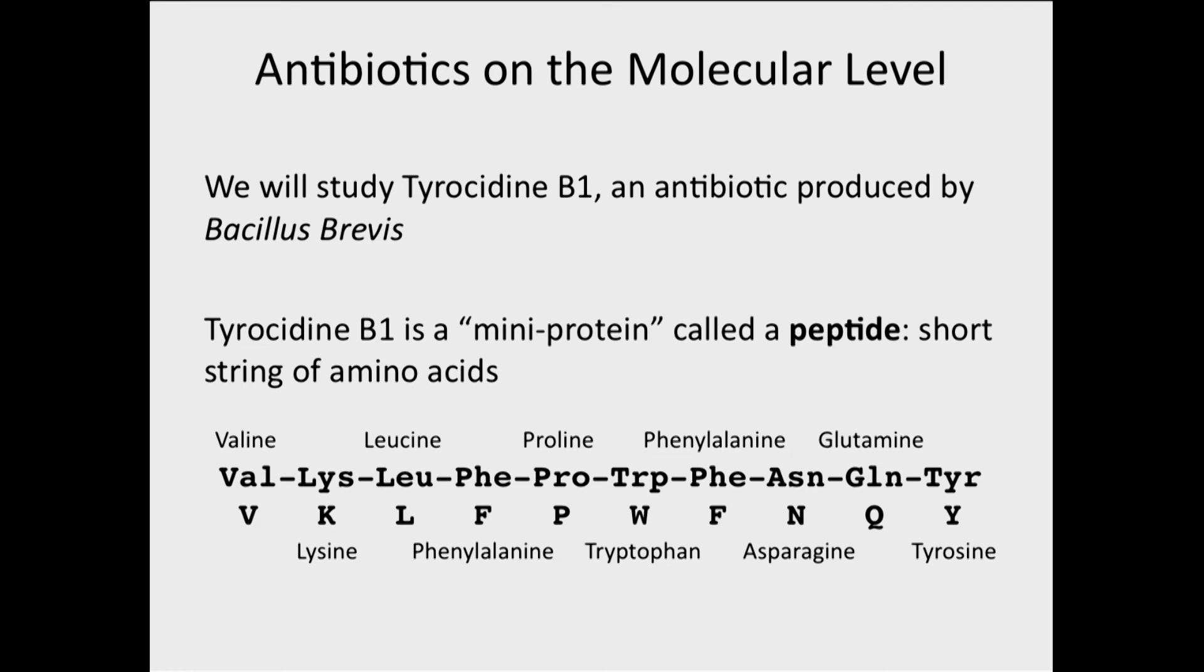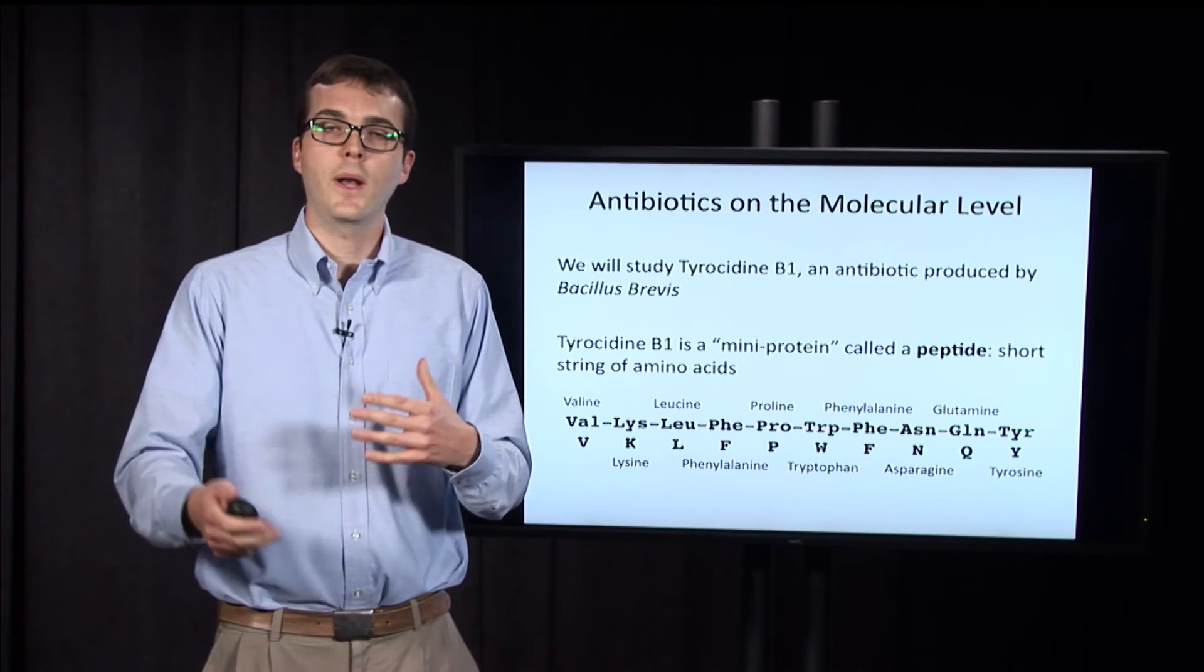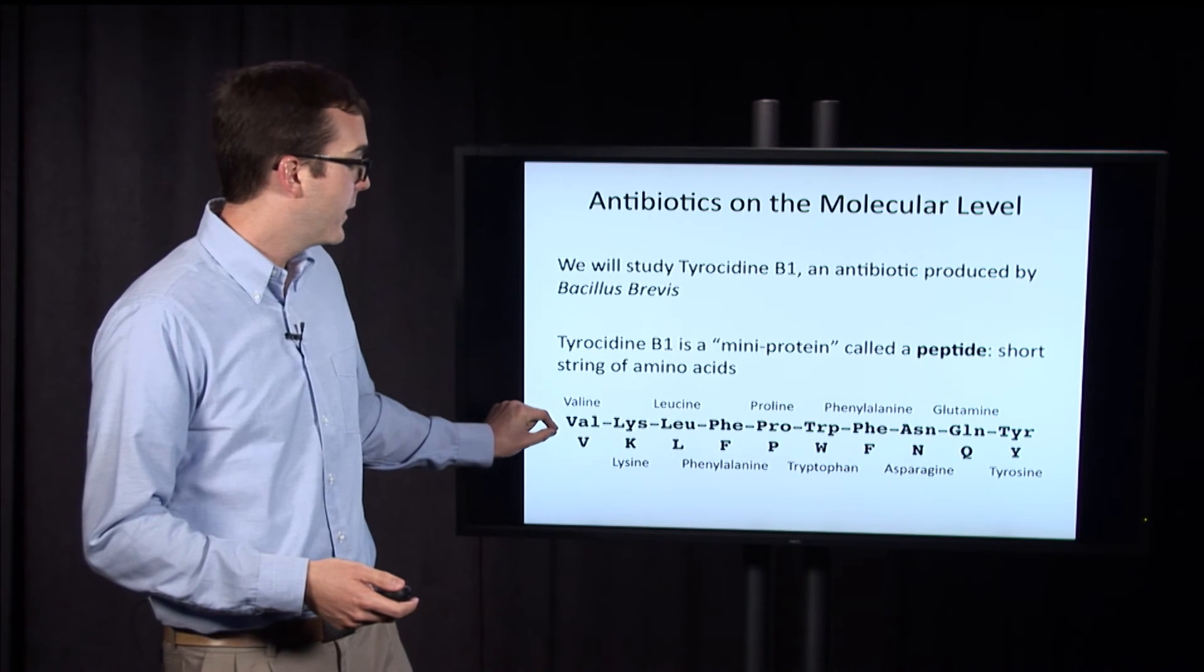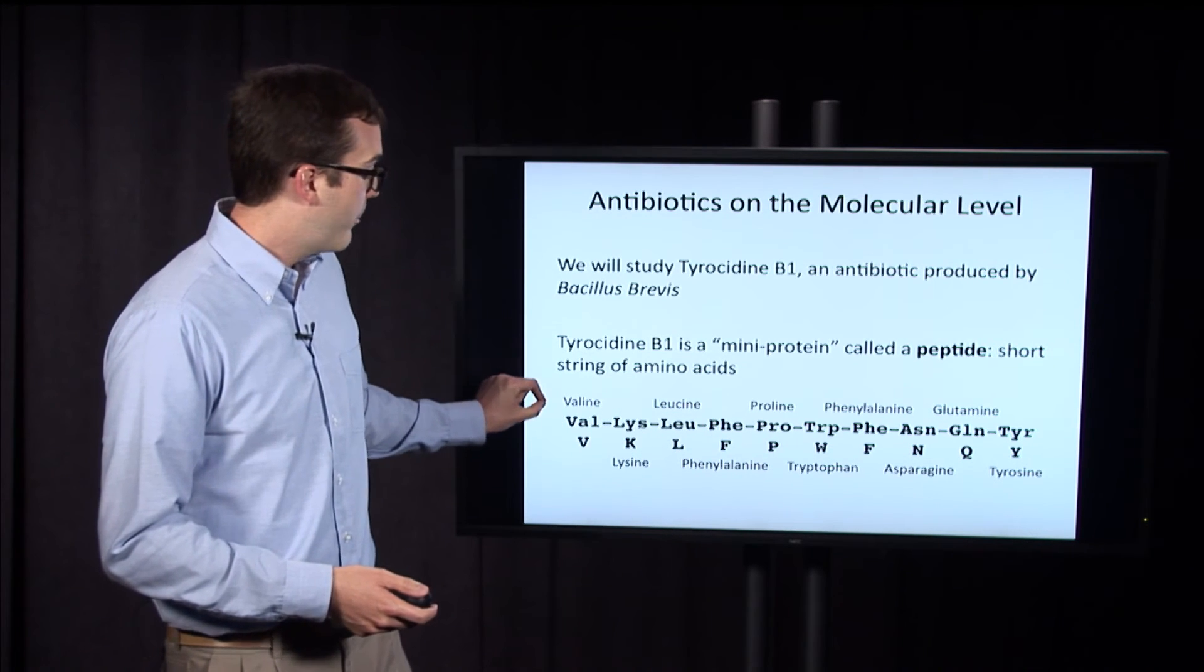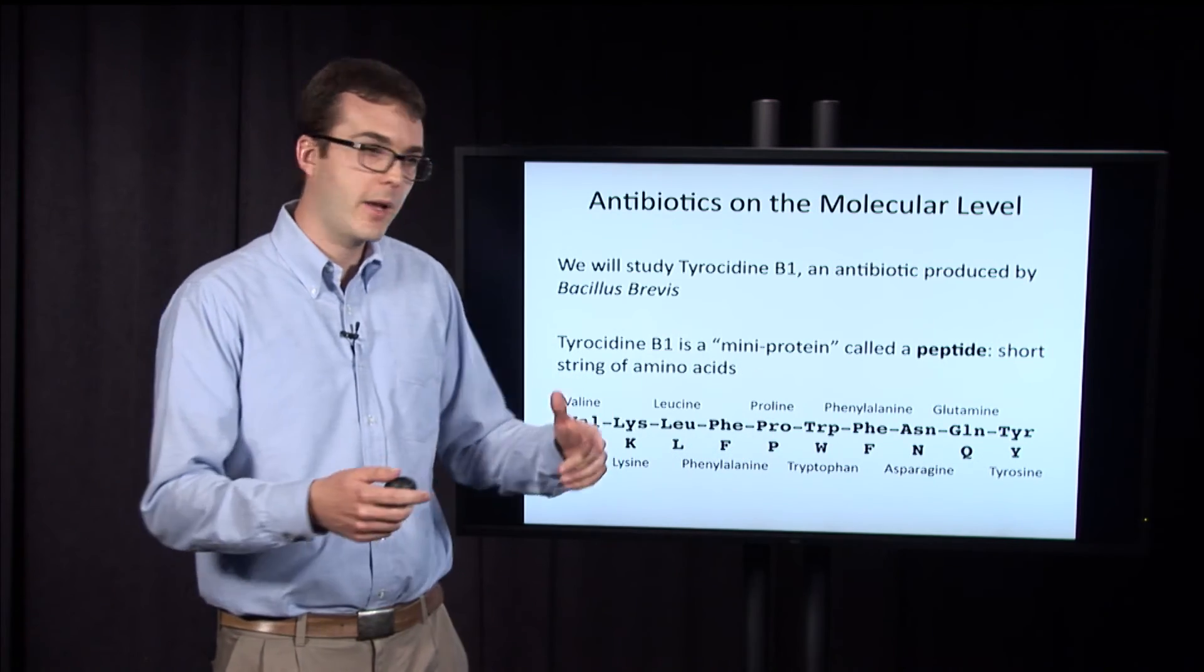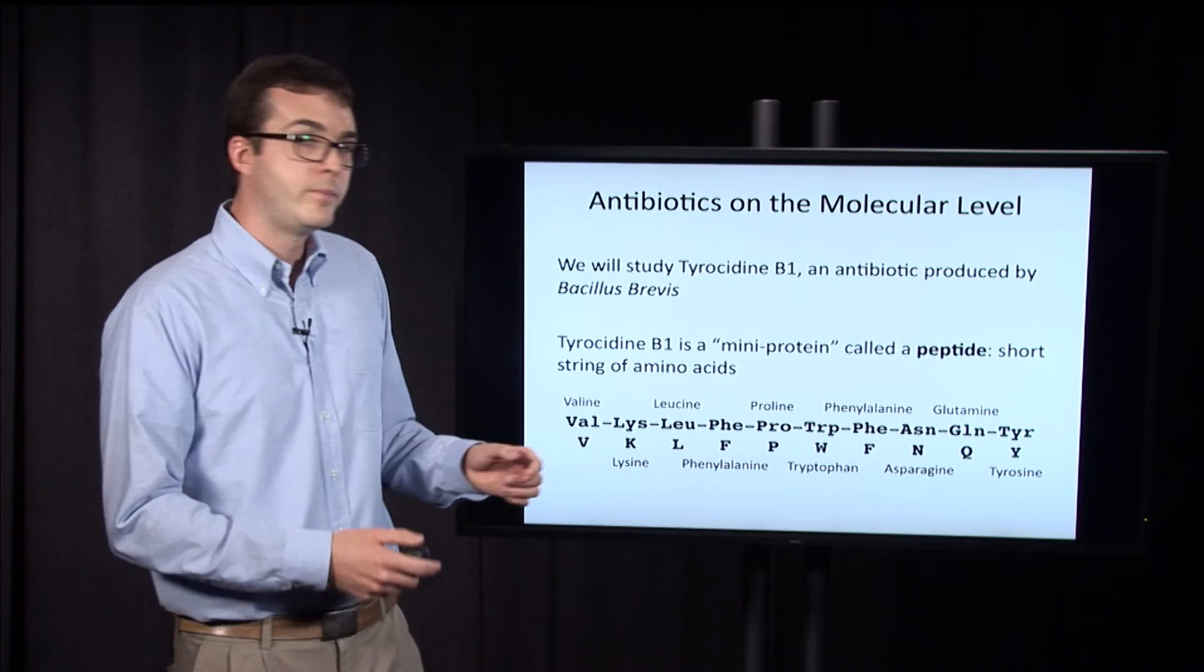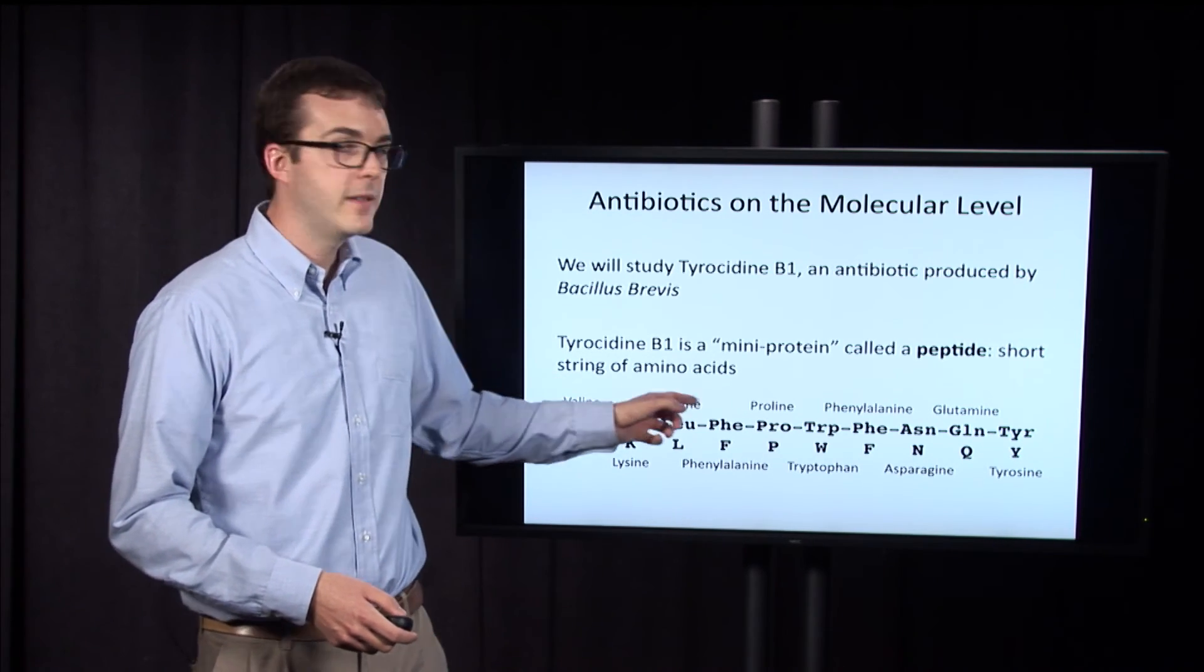This peptide is really just a short string of amino acids. There are 20 commonly occurring amino acids, and amino acids are represented either in a single-letter alphabet, so the peptide here is VKLF, etc., or sometimes there's a three-letter abbreviation, so that's shown here. And this amino acid sequence is valine, lysine, leucine, and so on.